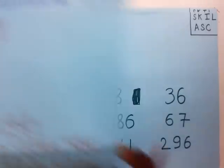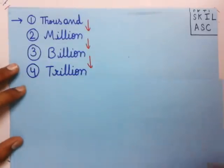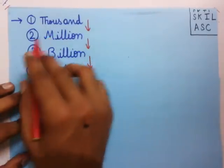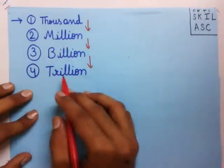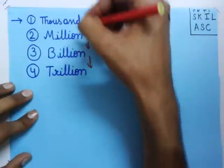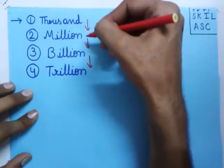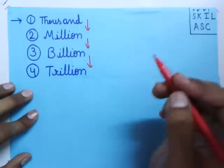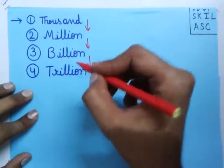Let us start. The first point is you must remember these four words: first, thousand; second, million; third, billion; fourth, trillion. You must remember these four words in this same order: thousand, million, billion, trillion.